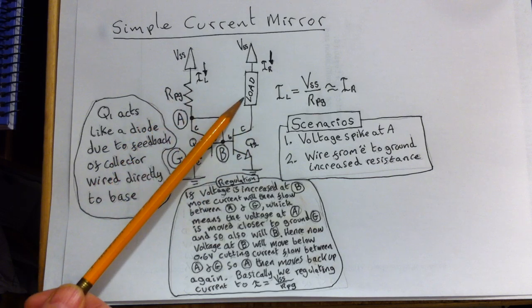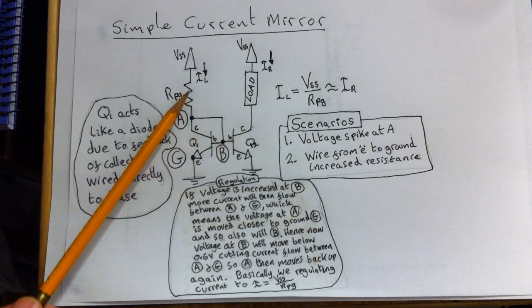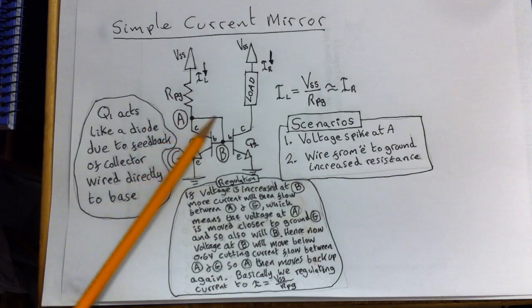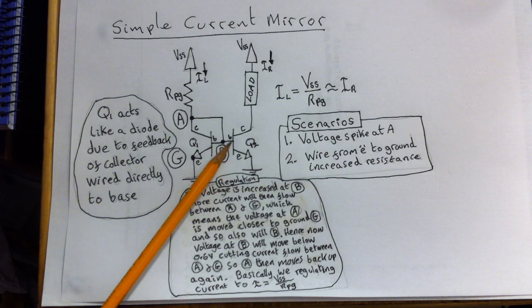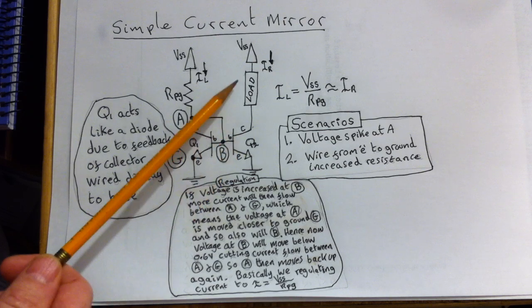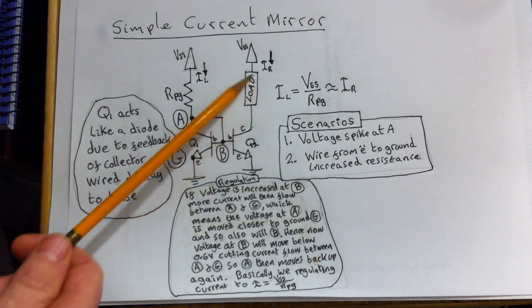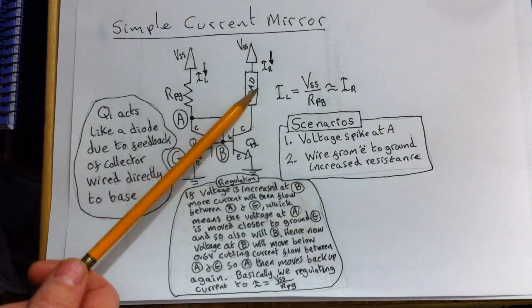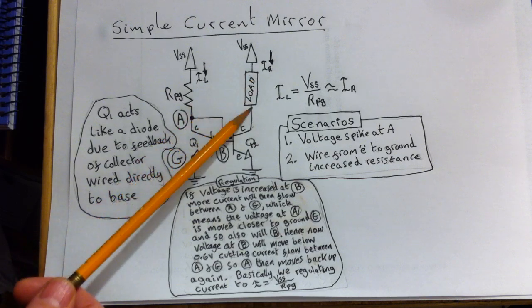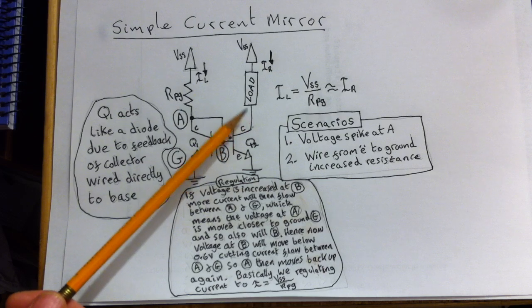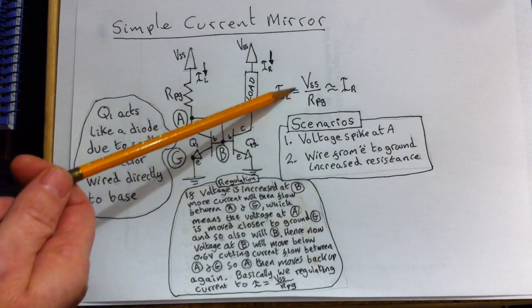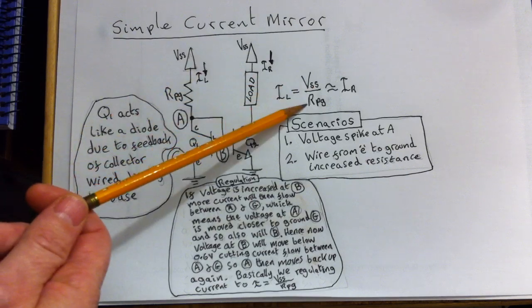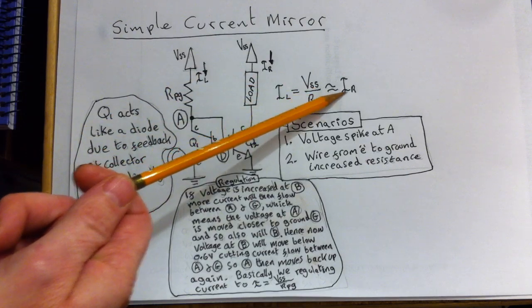So this is how we regulate the current of IR. We're basically forcing, by this feedback effect, the base voltage here, which is emulated across to Q2. So no matter what we have in the load here, it could be any kind of circuit at all. The current coming in is the same as the current coming out, and it will always be equal to IL. So I've just written here IL equals VSS over RPG, which is the same as IR.